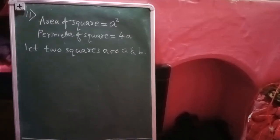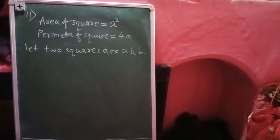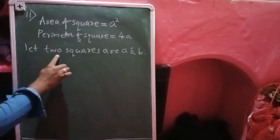Good morning dear students. We are discussing question number 11, that is the last question of exercise 3 on quadratic equations. The question is: the sum of the areas of two squares is 468 square meters. If the difference of their perimeters is 24 meters, find the sides of the two squares. Here two squares are there which I have considered.